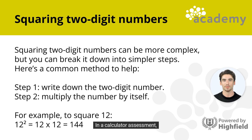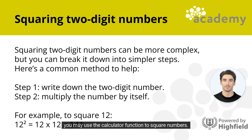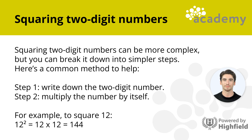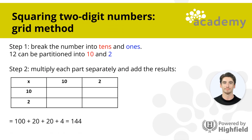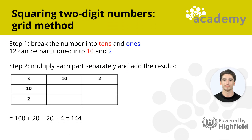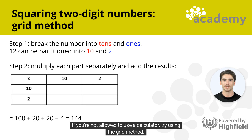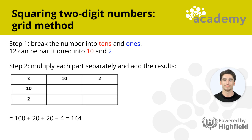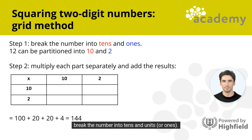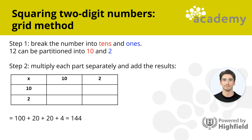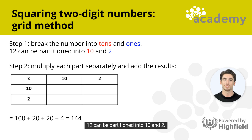In a calculator assessment, you may use the calculator function to square numbers. If you're not allowed to use a calculator, try using the grid method. Step 1: break the number into tens and units, or ones. For example, 12 can be partitioned into 10 and 2.